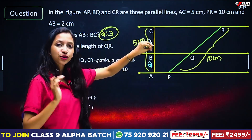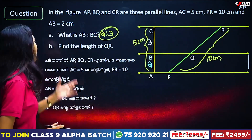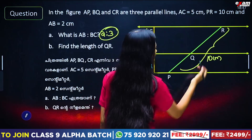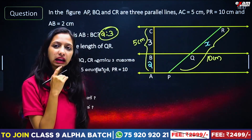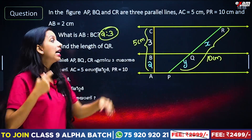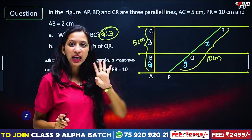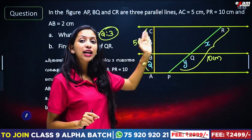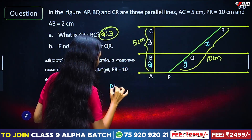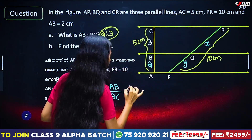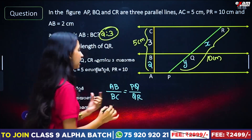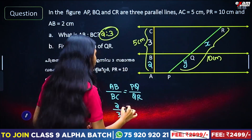AB by BC is equal to PQ by QR. That is 2 by 3 is equal to PQ by QR. We apply the principle that three or more parallel lines cut any two lines in the same ratio. So AB by BC equals PQ by QR.